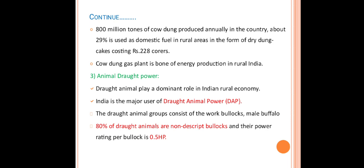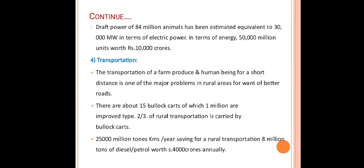The next topic is animal drought power. Drought animals play a dominant role in the Indian rural economy. India is the major user of drought animal power (DAP). The drought animals group consists of horses, bullocks, and male buffaloes — 80 percent of drought animals are non-descript bullocks with a power rating of 0.5 HP per bullock. The drought power of 84 million animals has been estimated equivalent to 30,000 million watts of electric power, and 50,000 million units of energy worth 10,000 crores.